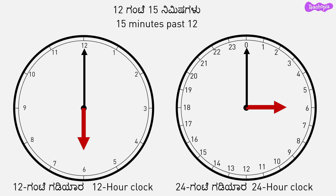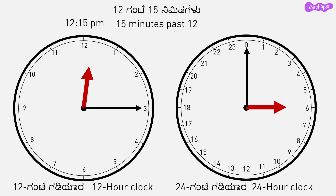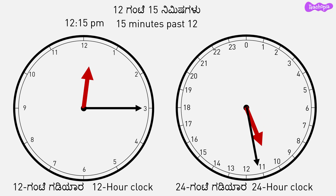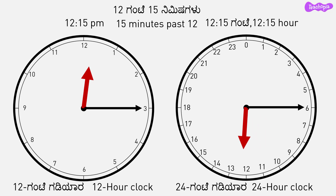Now, 15 minutes past 12. In 12 hour format it will be 12:15 p.m. — here a.m. is changing to p.m. after 12. And in 24 hour format it will be 12:15 hours. In both clocks, the hour hand would have crossed 12. The amount of rotation of the minute hand in both clocks is the same.